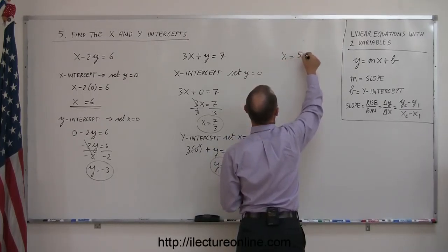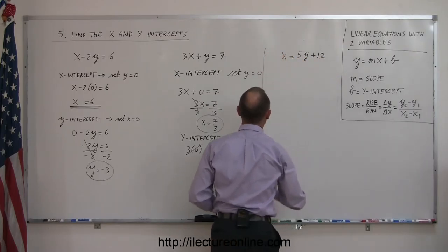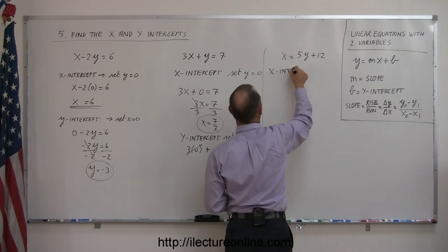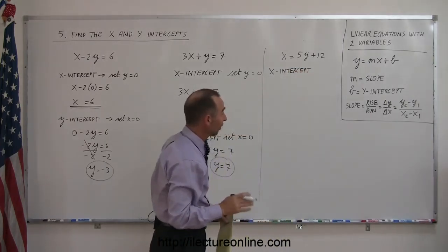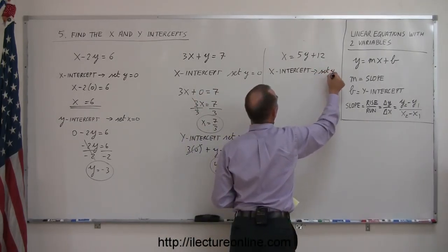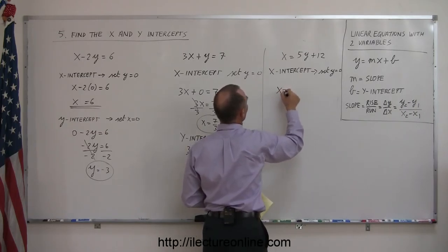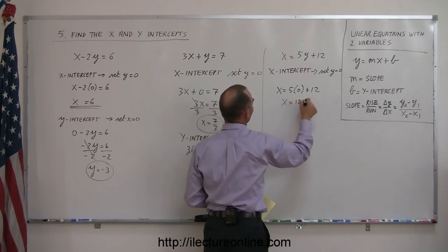When x equals 7 over 3 is the x-intercept. To find the y-intercept, set x equal to zero. Take the original equation: 3 times zero plus y equals 7. Of course, that cancels out and we get y equals 7. And there's your y-intercept. So these are fairly straightforward.